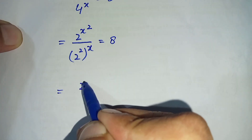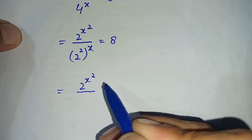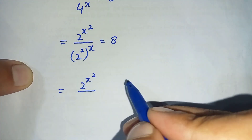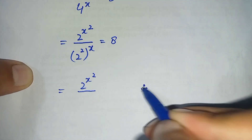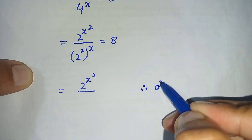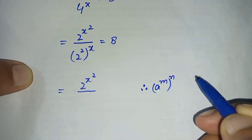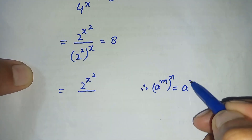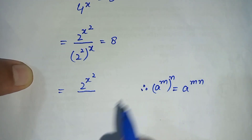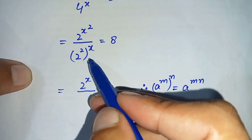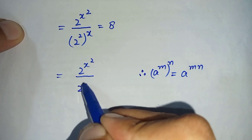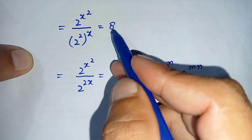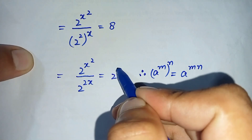Equal to 2 raised to power x squared. Here we will multiply the powers with each other by using an exponential formula: a raised to power m, raised to power n, is equal to a raised to power m multiplied by n. So by using this formula, the denominator will become 2 raised to power 2x, is equal to 2 raised to power 3.